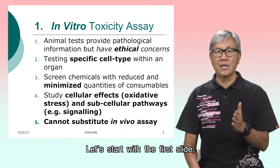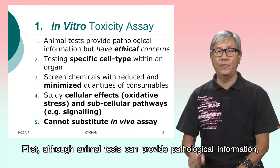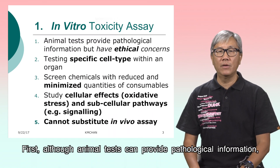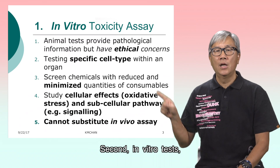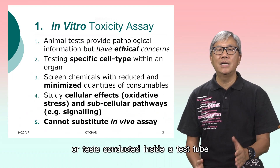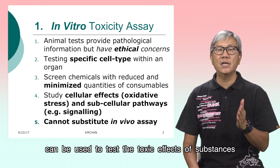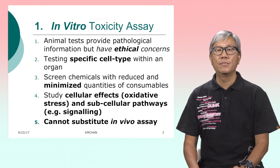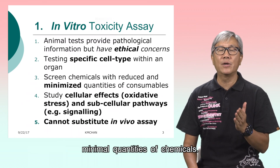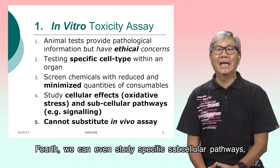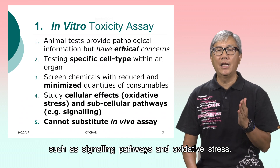Let's start with the first slide, which explains why we conduct in vitro toxicity assays. First, although animal tests can provide pathological information, these tests have ethical concerns. Second, in vitro tests — conducted inside a test tube using cells grown from an organ — can be used to test the toxic effects of a substance on specific tissues. Third, in vitro tests enable us to screen minimal quantities of chemicals. Fourth, we can even study specific subcellular pathways such as signaling pathways and oxidative stress.